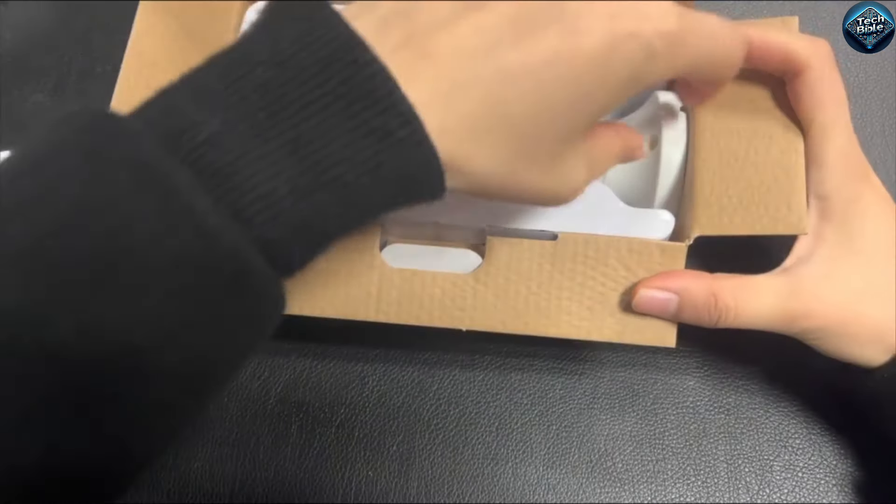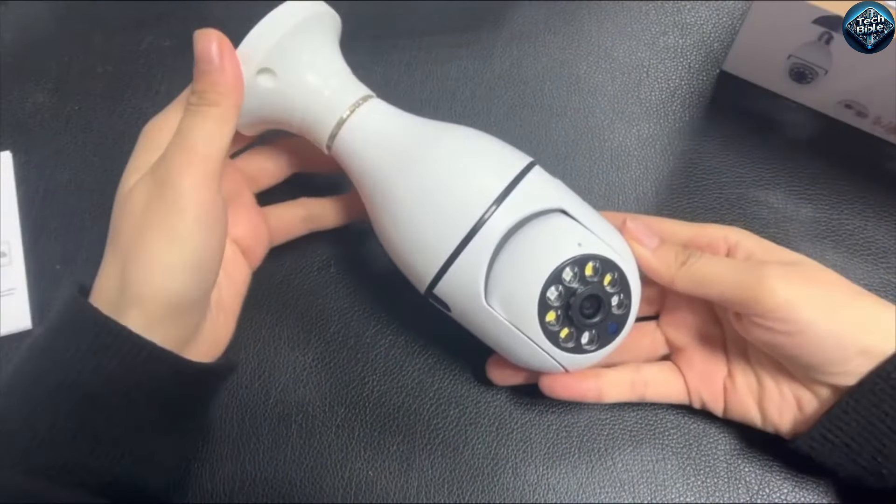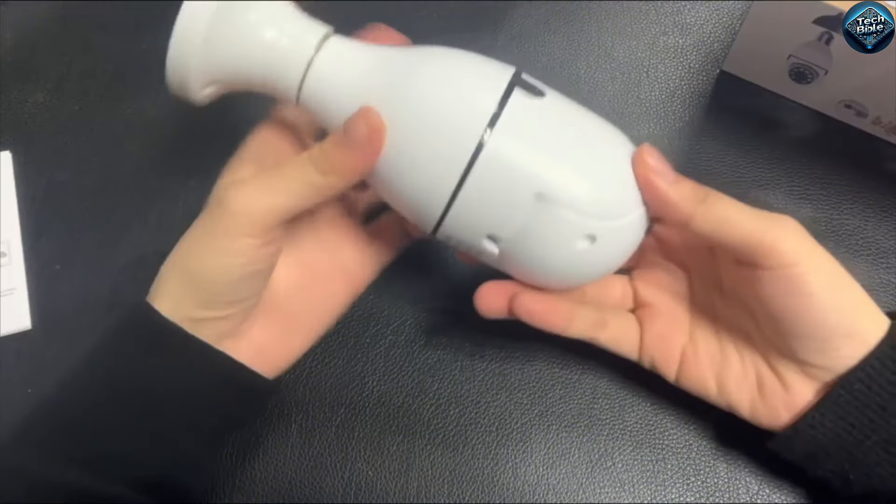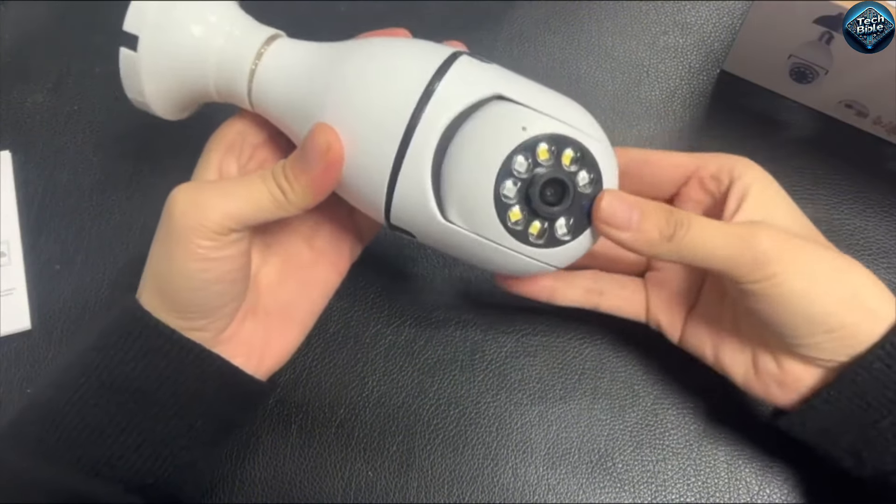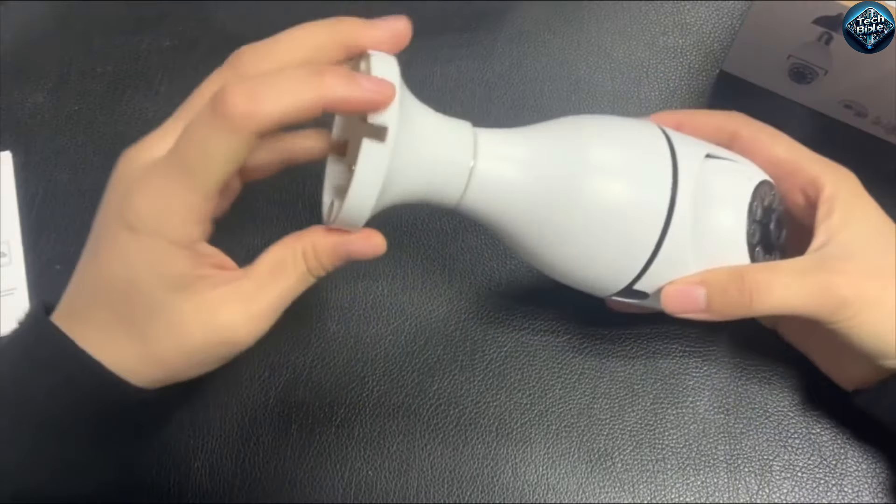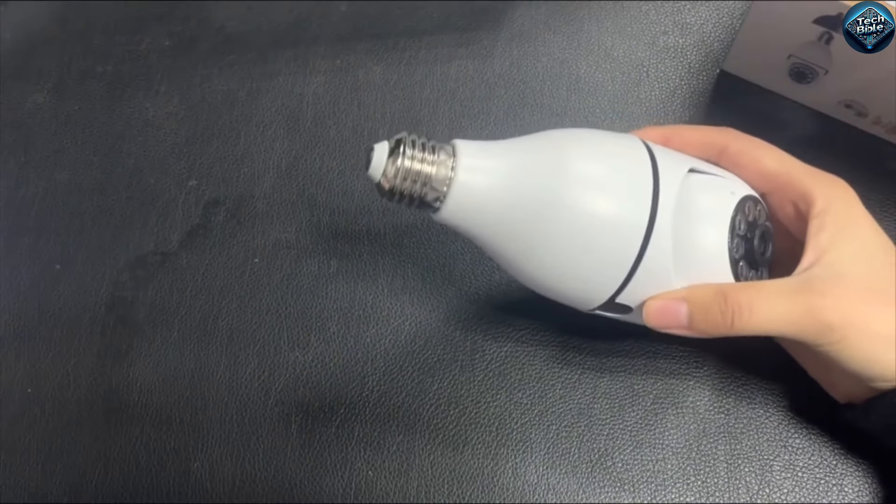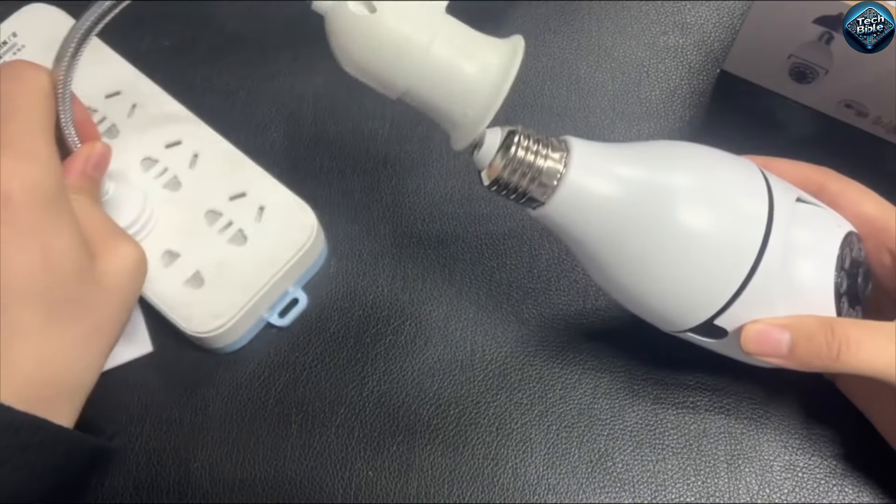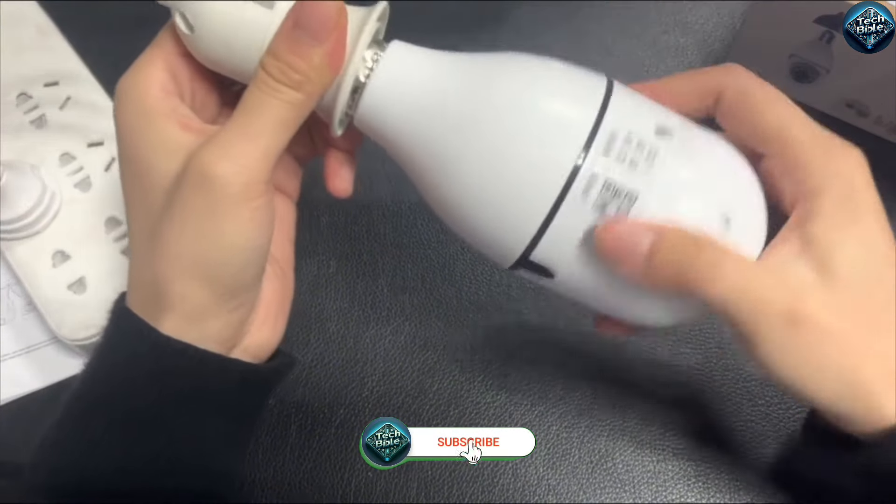The Wi-Fi LED light bulb camera is a covert gadget designed to blend seamlessly into your home environment by doubling as both a light source and a surveillance camera. Despite its innovative functionality, this device is banned in many regions due to privacy concerns.